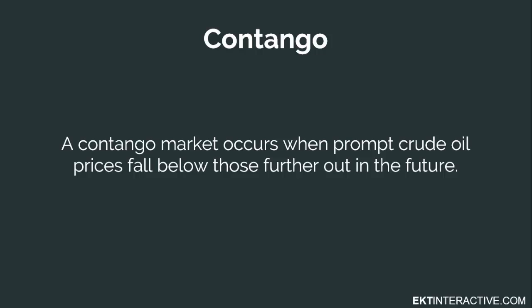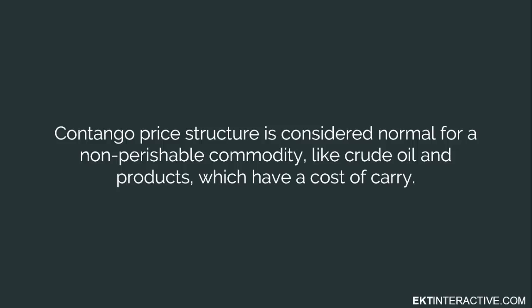So what is contango? A contango market occurs when the prompt crude oil futures fall below those further out in the future. These prices reflect the current as well as future expectations of oil prices. It is important to note that a contango price structure is considered normal for a non-perishable commodity, like crude oil and products, which have a cost of carry.